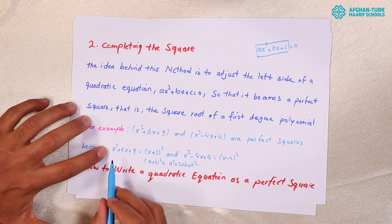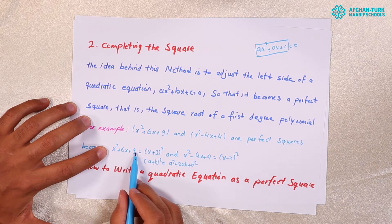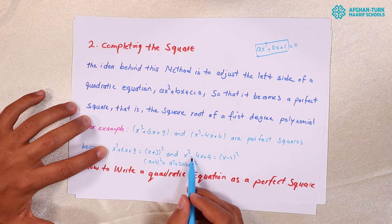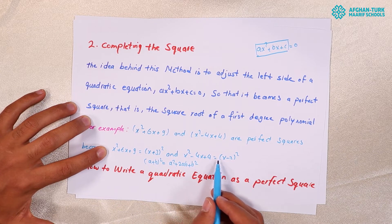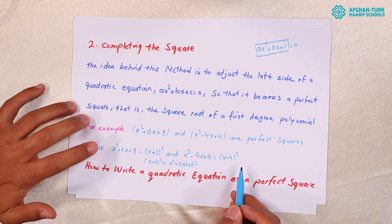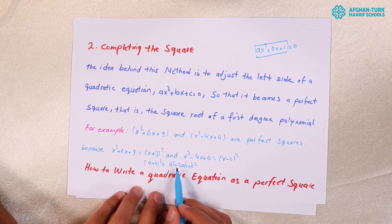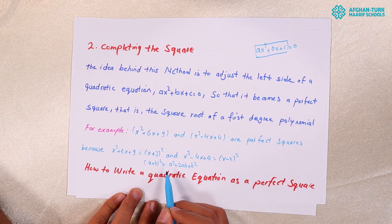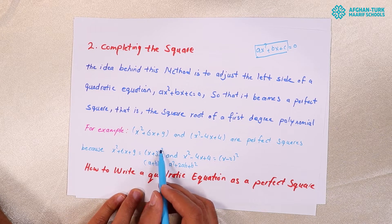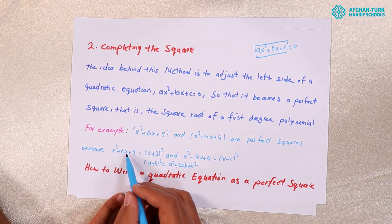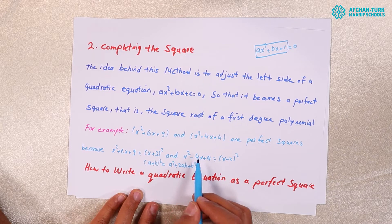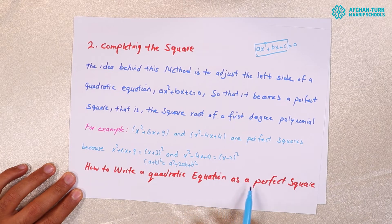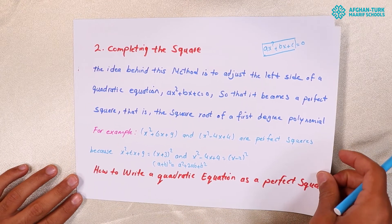X squared plus 6X plus 9 can be written as X plus 3 squared, and X squared minus 4X plus 4 can be written as X minus 2 squared. This is the general formula for expanding the binomial form A plus B to the power of 2. This is the meaning of a perfect square. So, we are going to study how to write a quadratic equation as a perfect square.